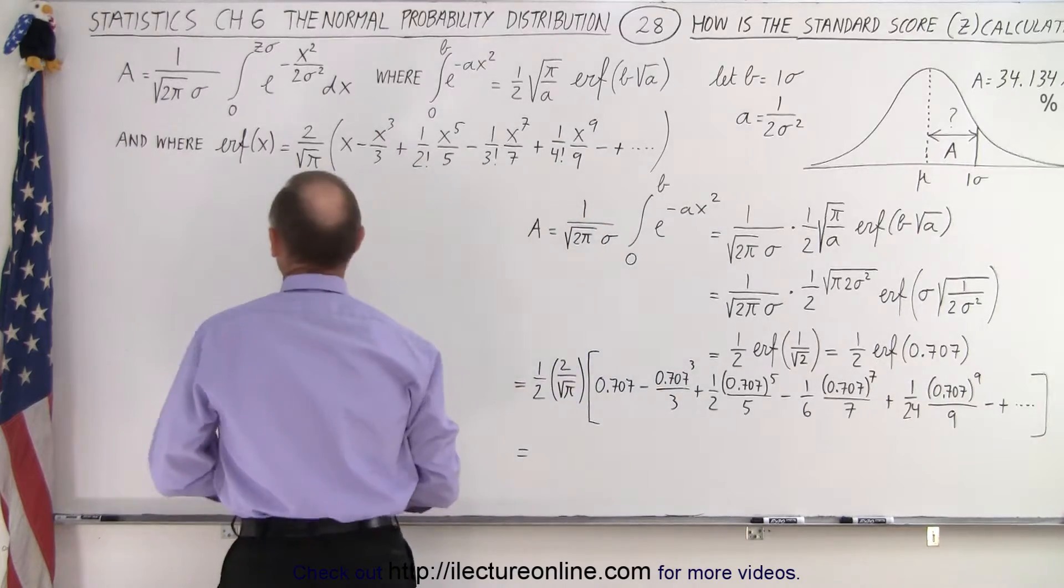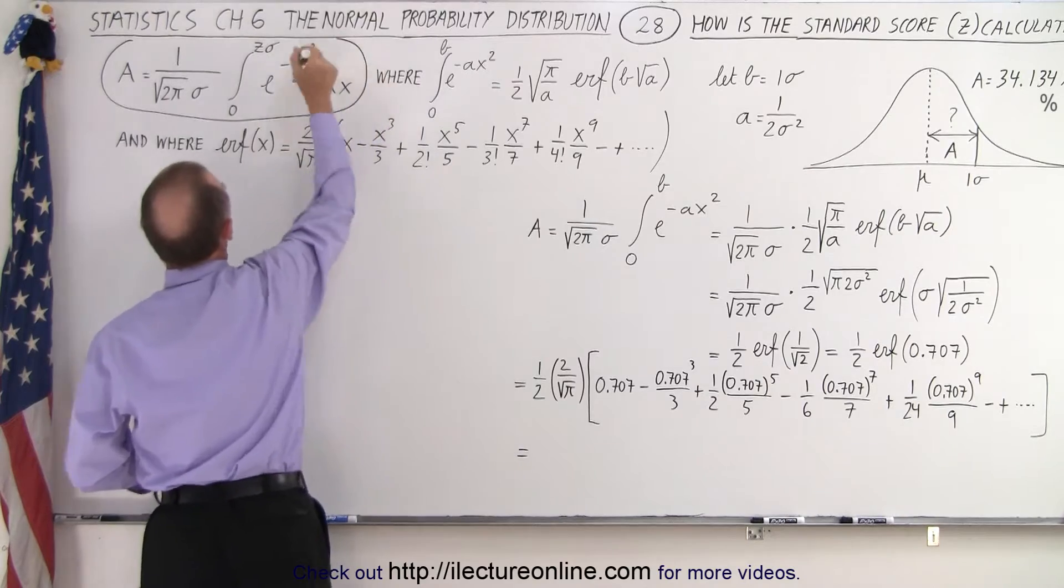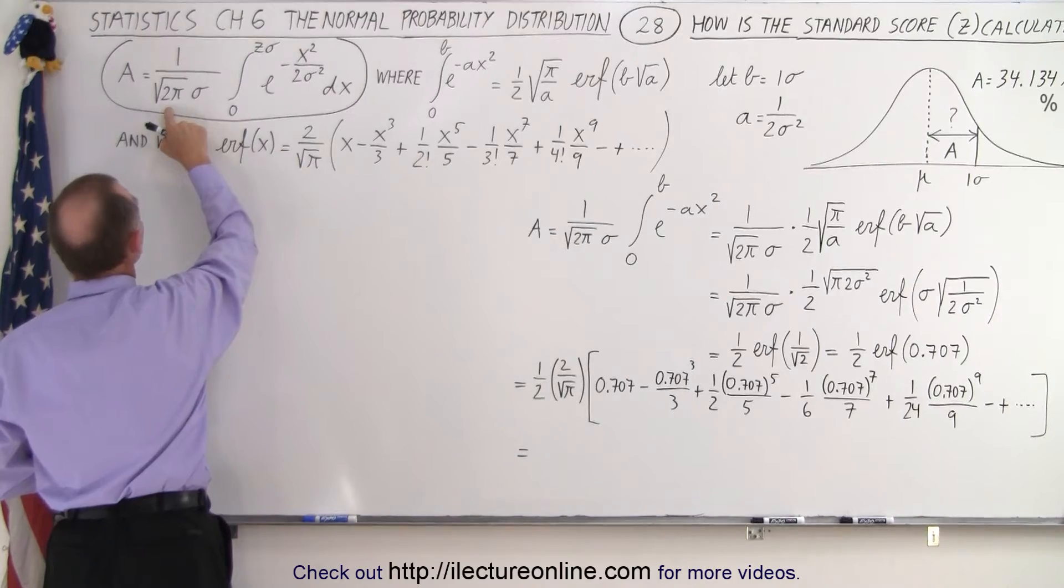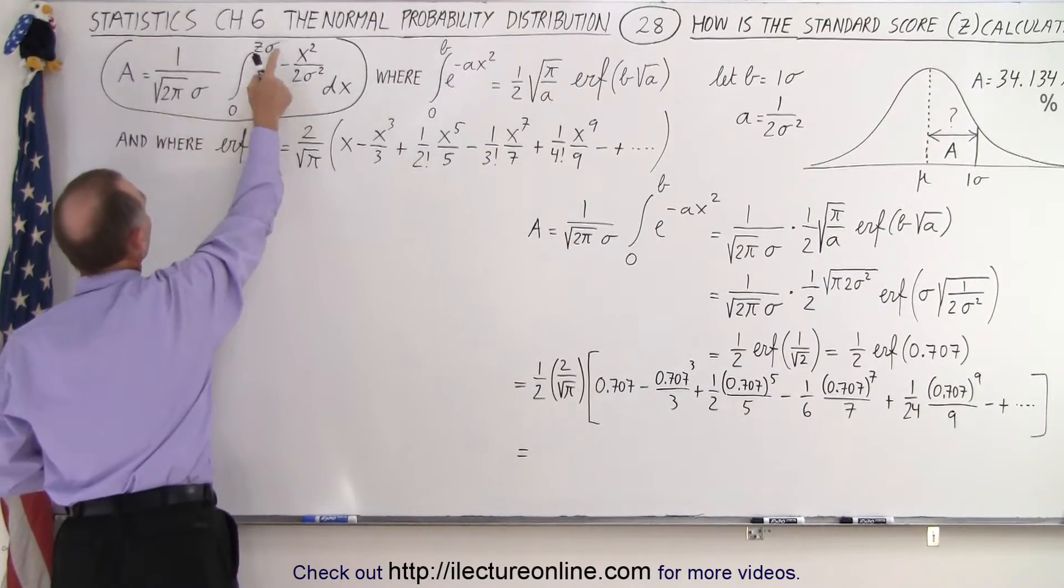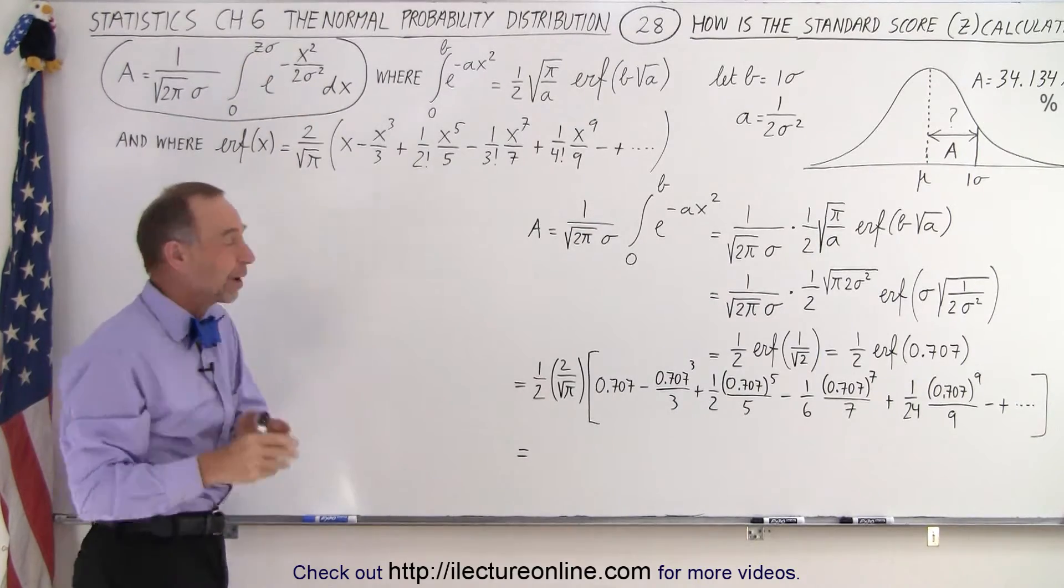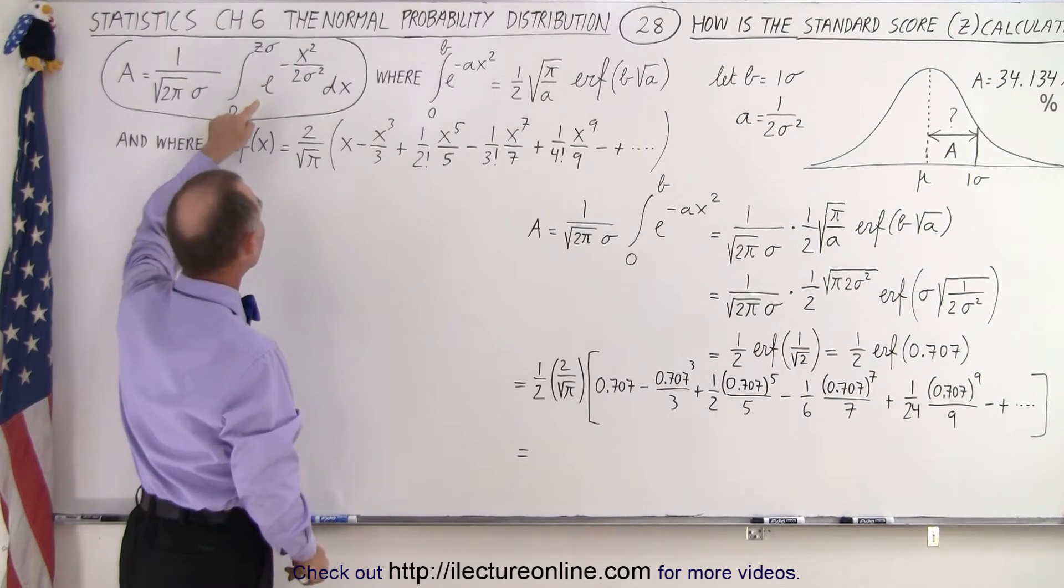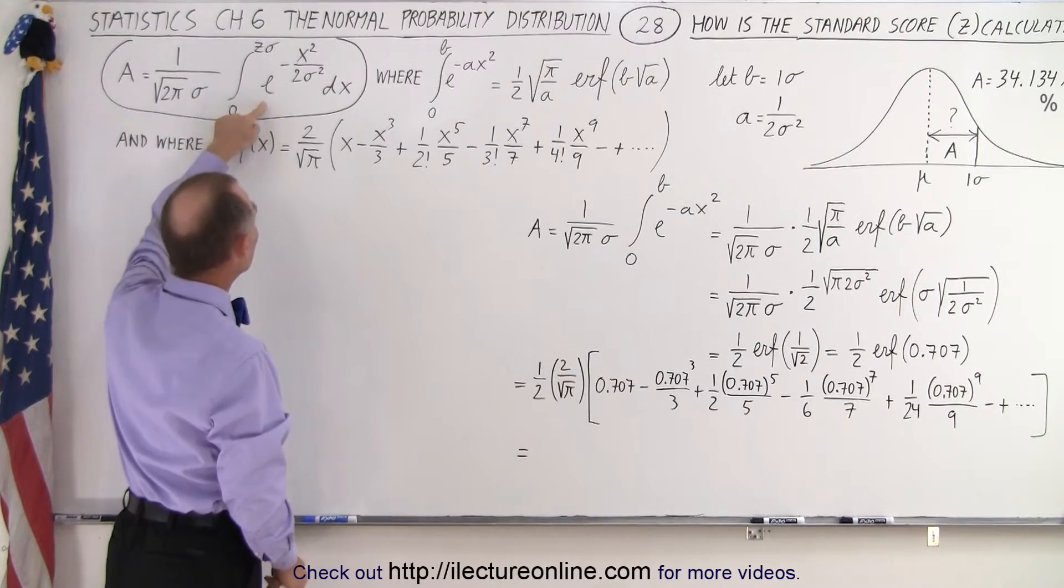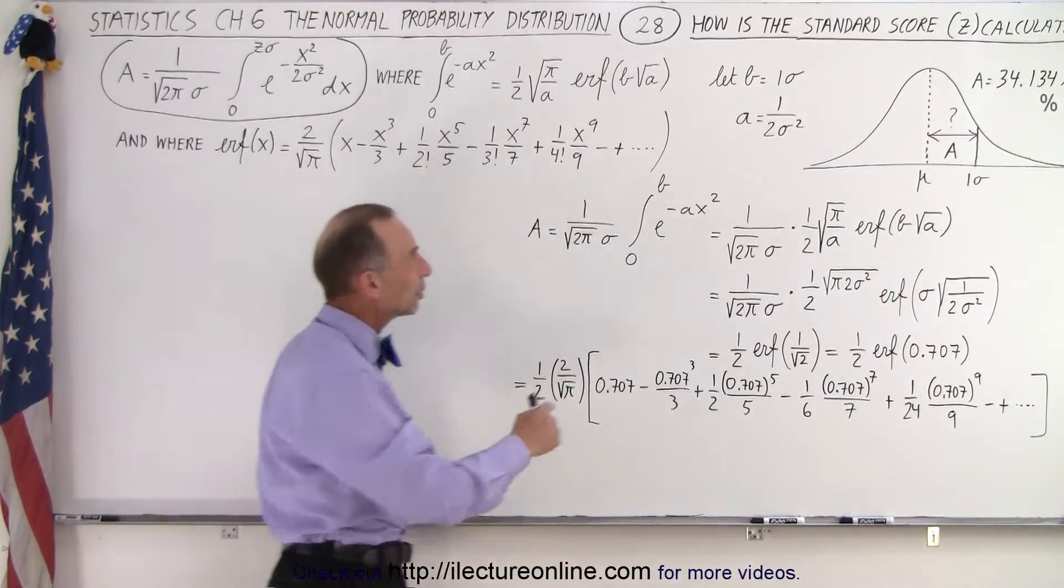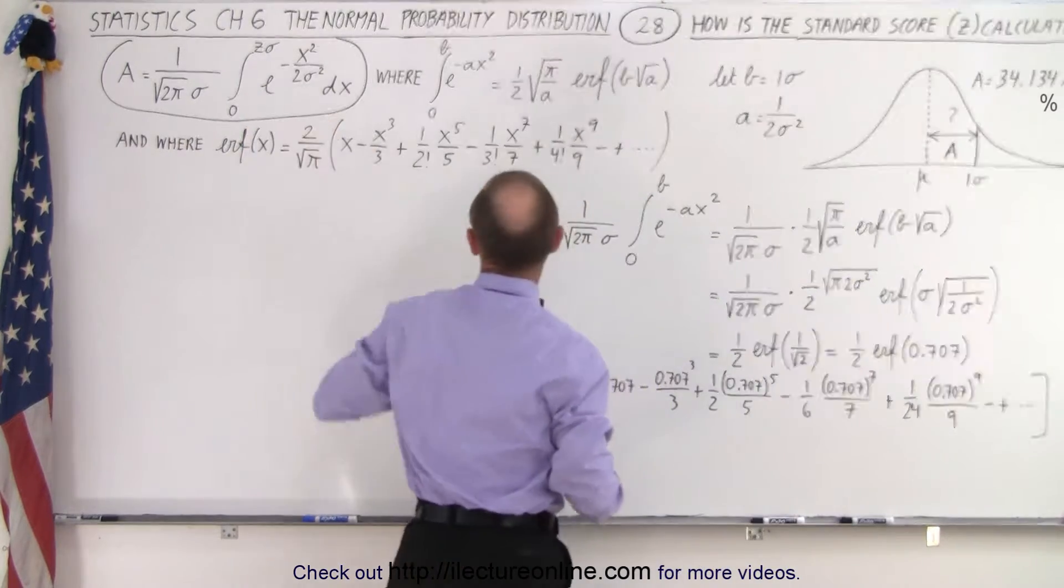So first of all, the area underneath the curve is defined by this equation right here. So that's the equation: it's 1 over the square root of 2π times 1 over σ times the integral from 0 to zσ. Remember, z is the number of σ's away from the mean, so in this case we're going to use an example where z is equal to 1, and it's the integral of e to the minus x squared over 2σ squared dx. So it's simply integrating underneath this curve, and this curve is defined by that particular equation.